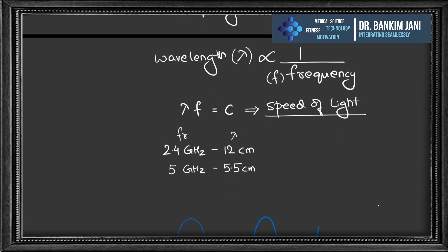Wavelength is inversely proportional to frequency. When we multiply wavelength by frequency, it gives us a constant value — the speed of light, C — which is approximately 186,000 miles per second.